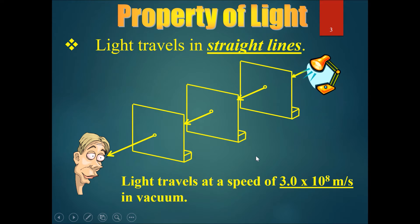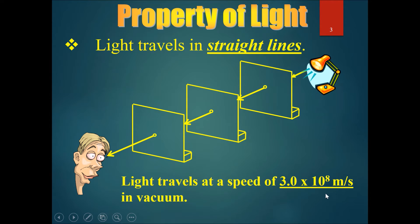Light travels at an extremely fast speed — it's the fastest speed known in the universe. It travels at 3 × 10⁸ meters per second in a vacuum, which is 300 million meters per second.